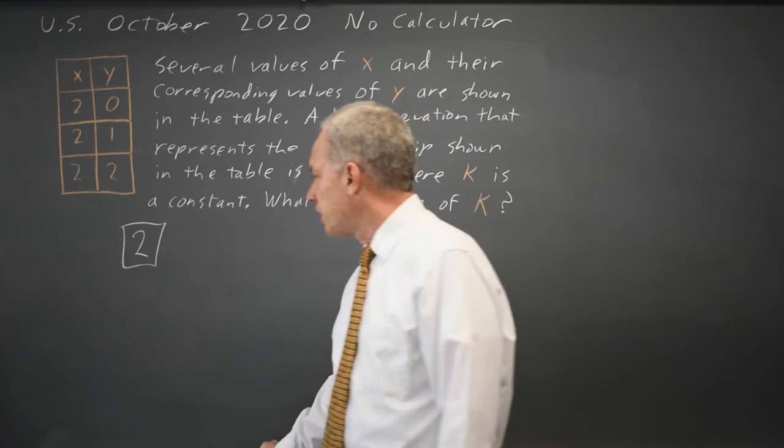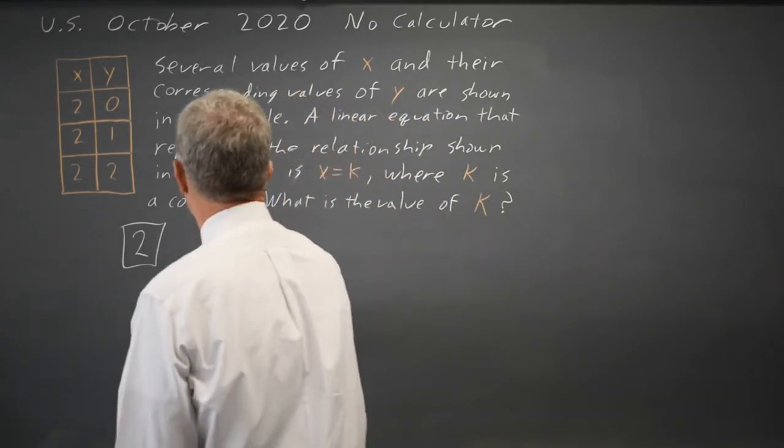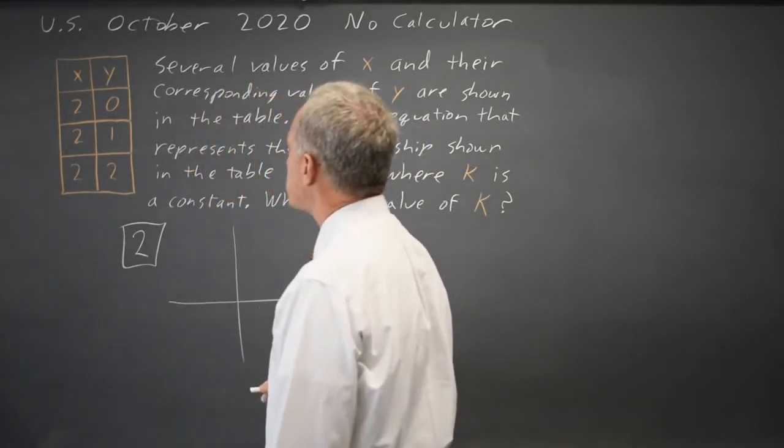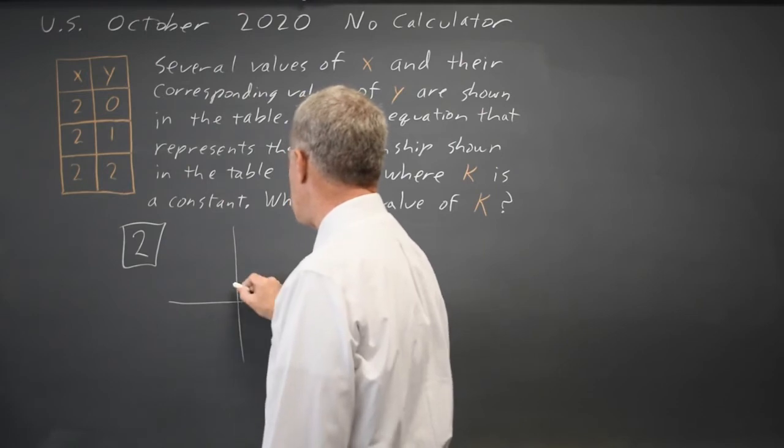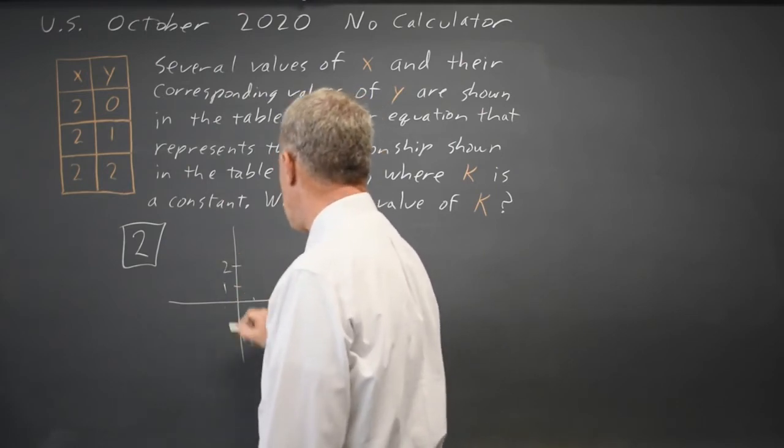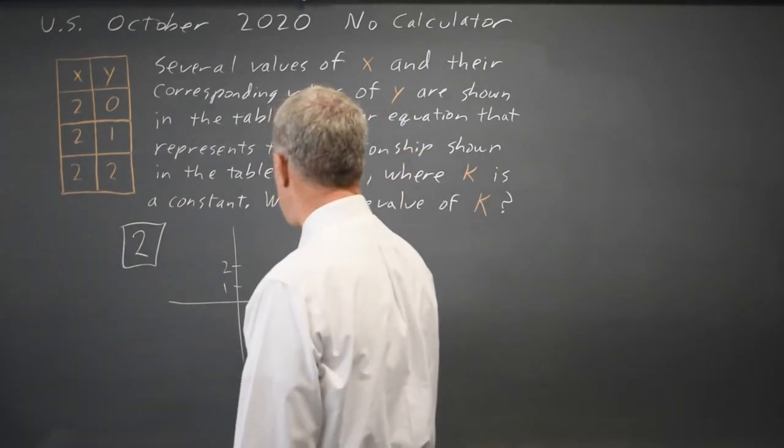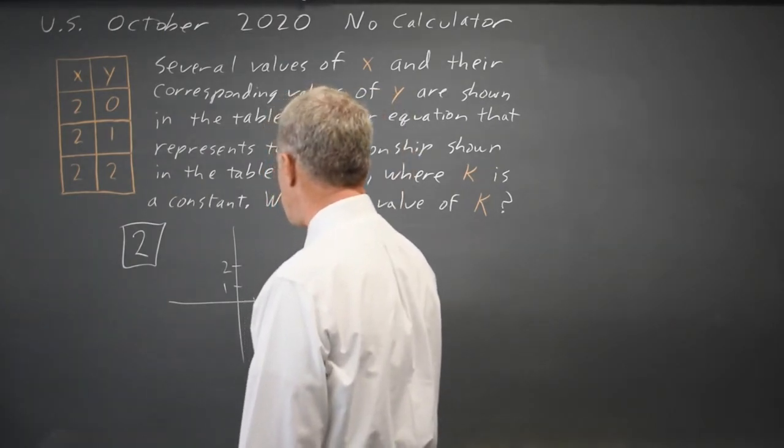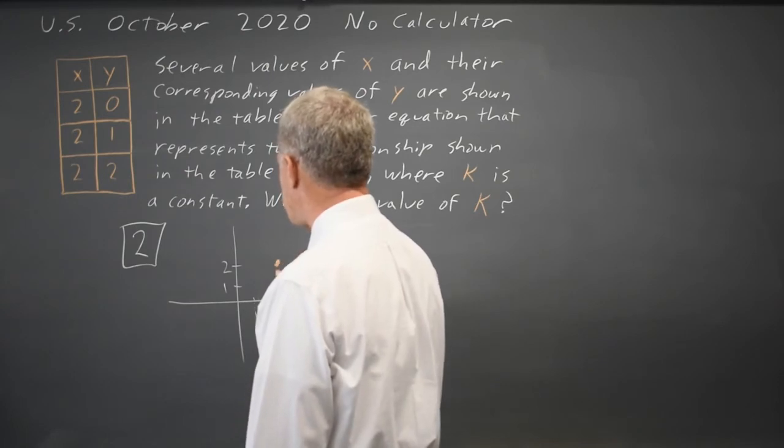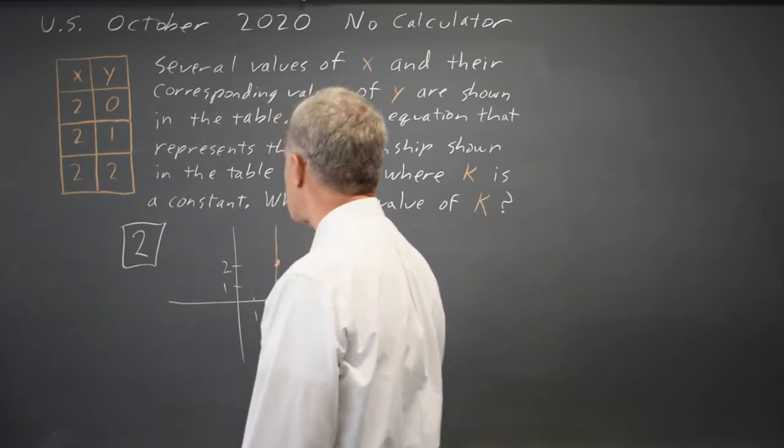If you wish to graph this, if you're having issues with seeing that, we can look at x equals 2 when y equals 0, x equals 2 when y equals 1, x equals 2 when y equals 2. If you sketch that graph,